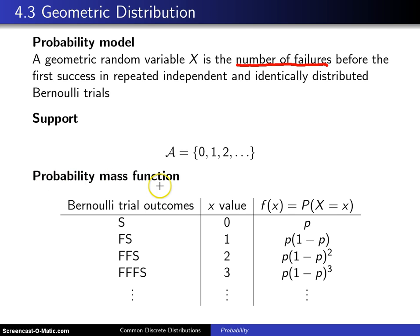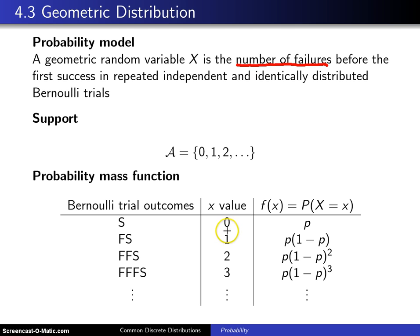As we try to put together the probability mass function, one way of doing that is listing all of the different outcomes for those Bernoulli trials. You could get a success on the first trial. When that is the case, there were 0 failures before your first success, so x takes on the value 0. The probability that that occurs is simply p, because p is the probability of success on an individual Bernoulli trial.